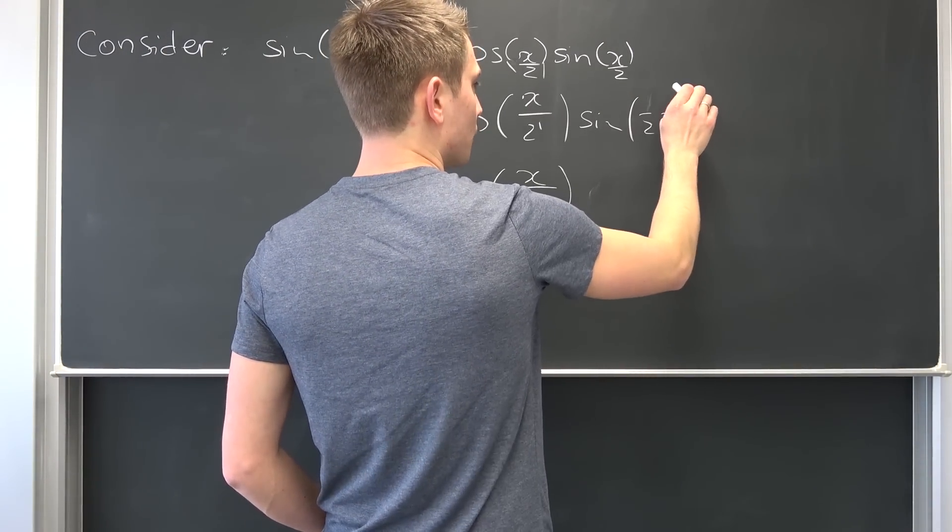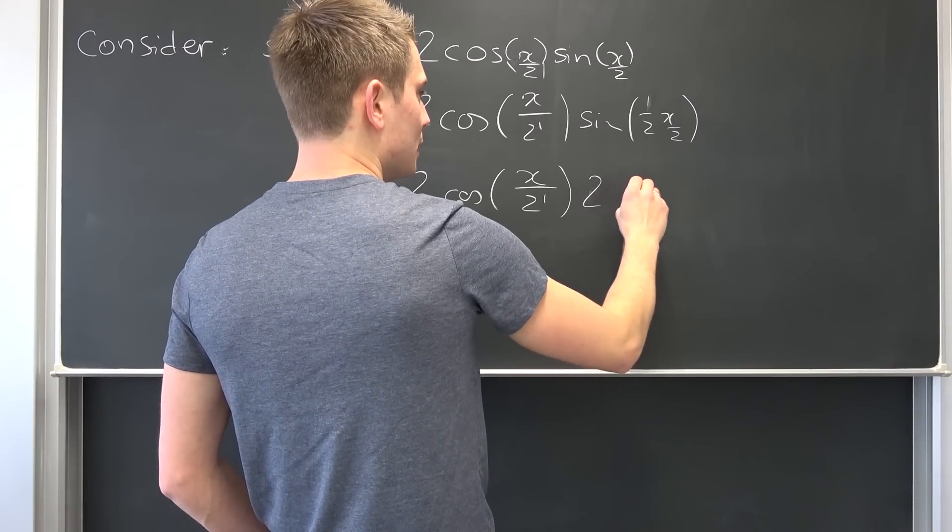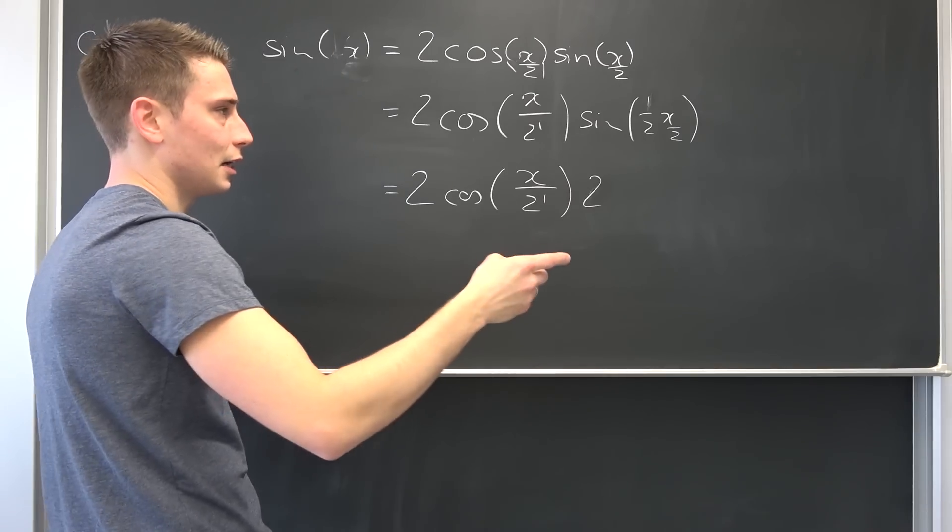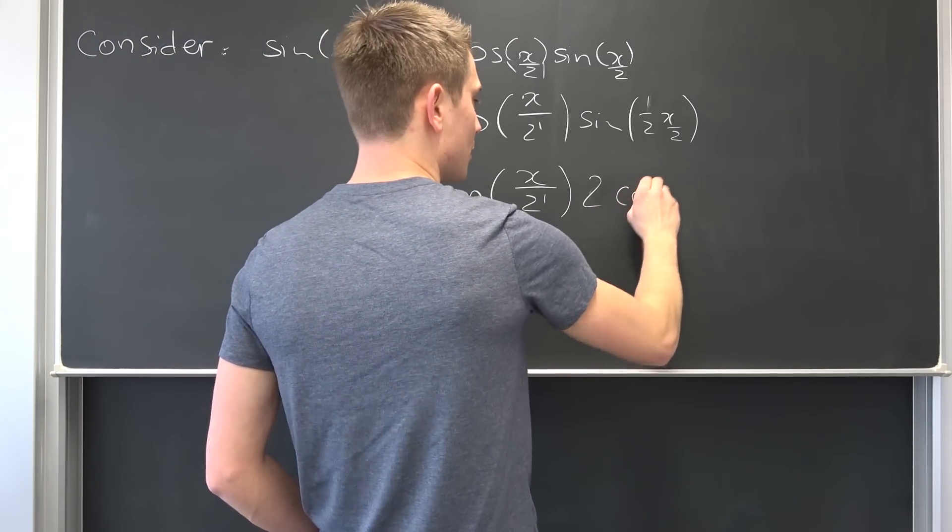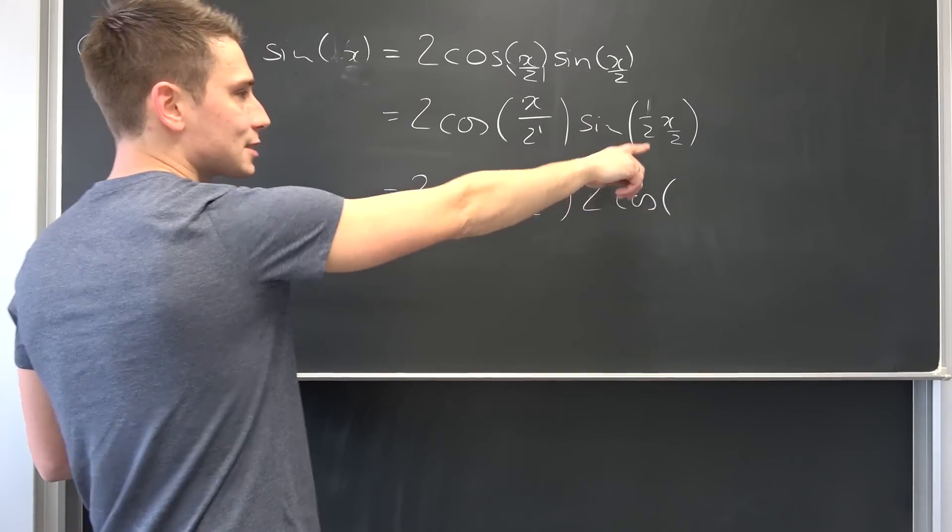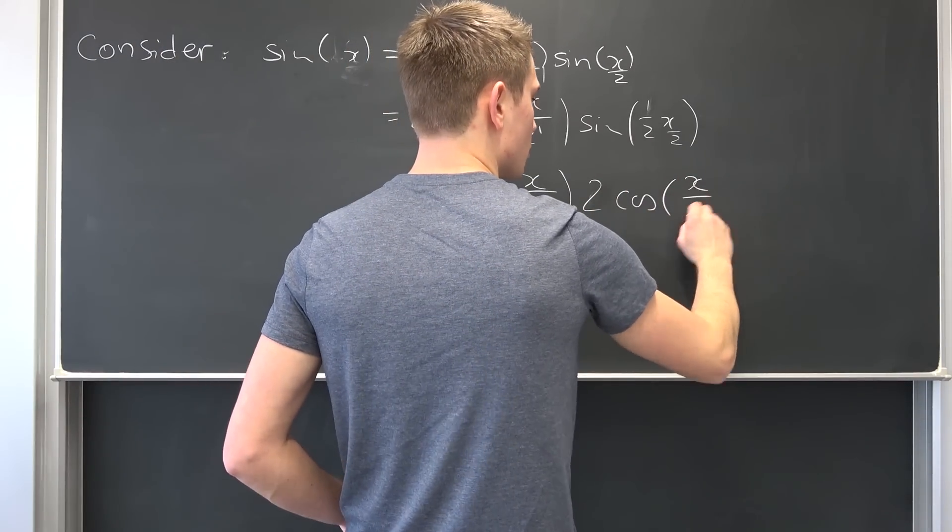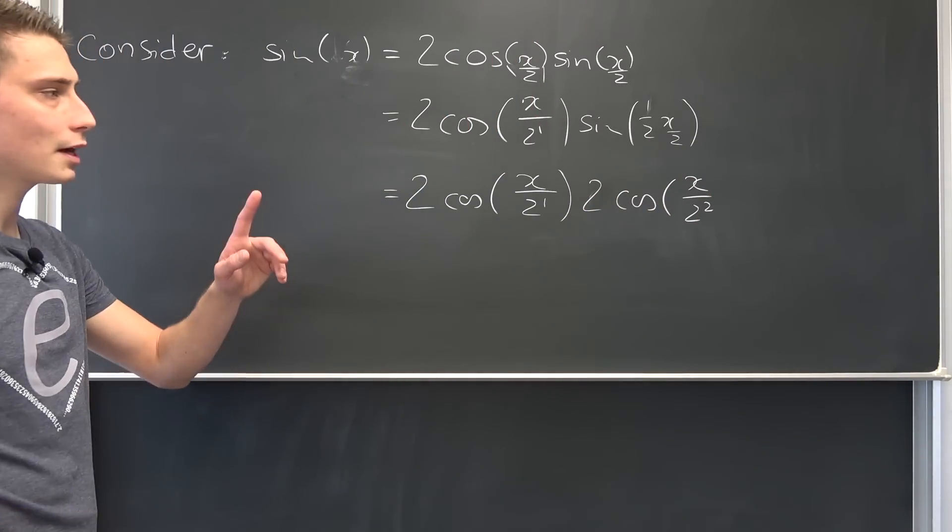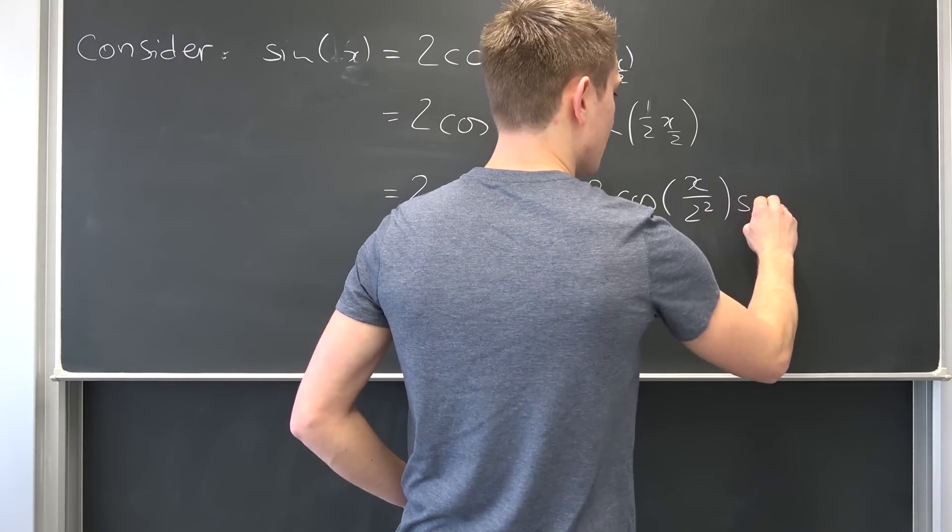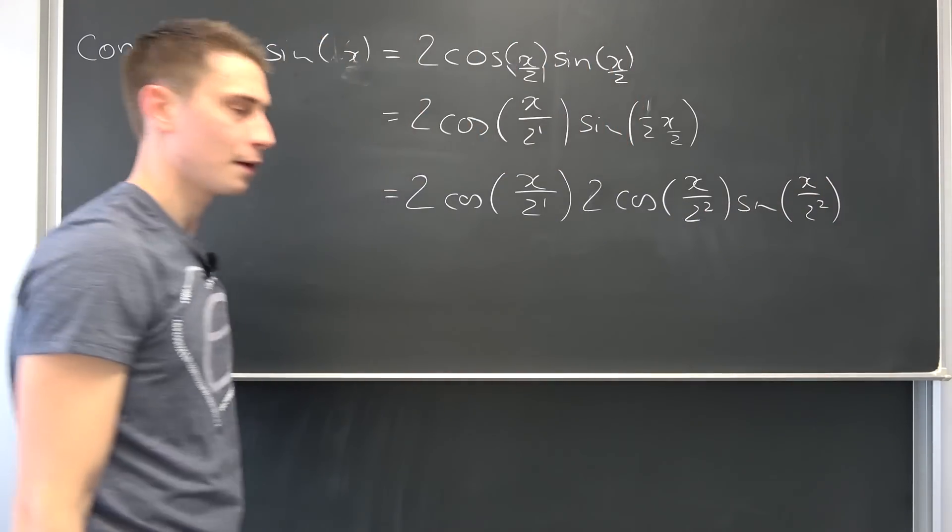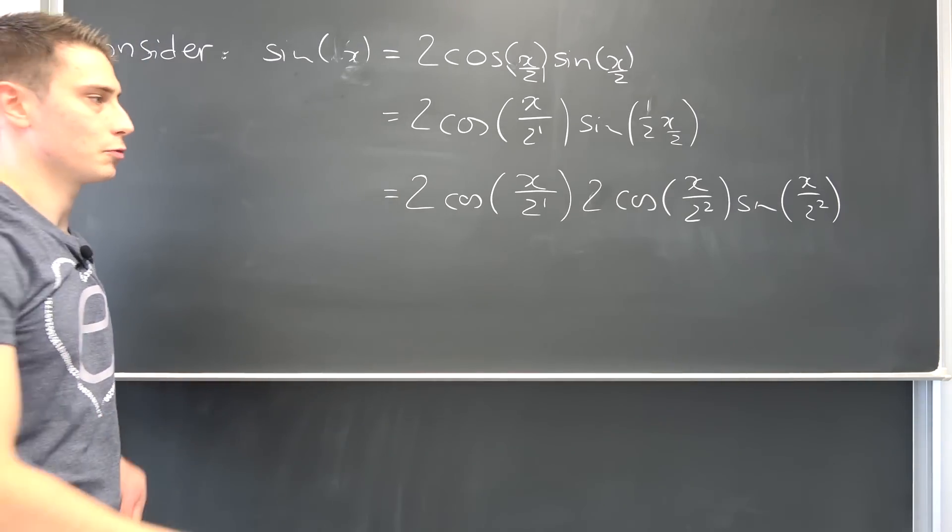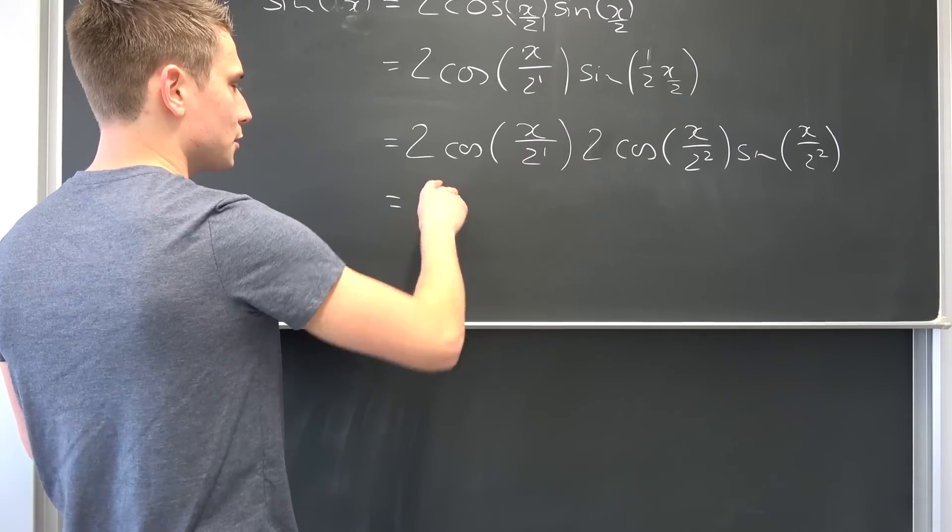We are going to go through this process again and again. Overall, we are going to get 2 times the cosine of X over 2 to the first power times, double angle formula yet again. We want to make use of the double angle formula. Double angle formula tells us that this is going to be the sine of, or 2 times the cosine, I'm terribly sorry, of X over 4 in this case, so X over 2 squared, times the sine of X over 2 squared. And so on and so forth. Overall we are going to get 2 squared.